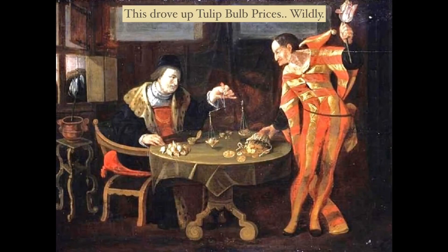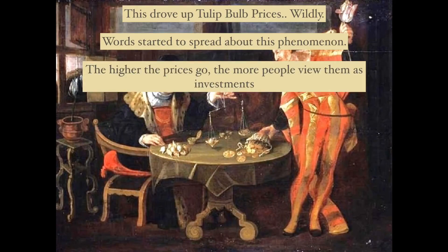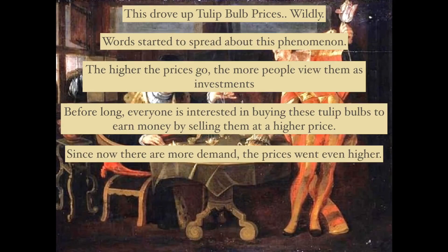This drove up tulip bulb prices — they went up so fast. Words started to spread about this phenomenon. The higher the prices go, the more people view them as investments. Before long, everyone is interested in buying these tulip bulbs to earn money by selling them at a higher price. Since there is more demand, prices went up — Economics 101. When there is more demand than supply, prices go up. When there is more supply than demand, prices come down. You might want to write that down as your most important note for this chapter.